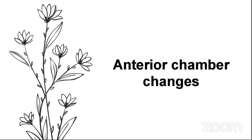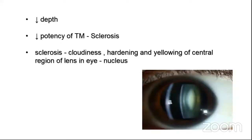Moving on to anterior chamber changes. The first is a decrease in the depth of the anterior chamber. The second is a decrease in the potency of the trabecular meshwork — the spongy tissue through which aqueous humor flows out. There will be decreased potency of the trabecular meshwork, and it causes sclerosis: cloudiness, hardening, and yellowing of the central region of the lens — the nucleus. Because of this condition, the lens slowly becomes cloudy and hard, hindering the patient's vision.